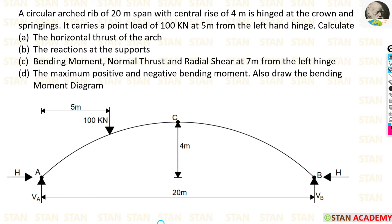Hello everyone. Today we are going to do a problem based on 3-hinged circular arches. Let us read the question one time. A circular arched rib of 20 meter span with a central rise of 4 meter is hinged at the crown and springings.